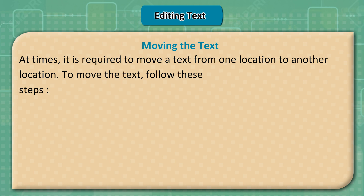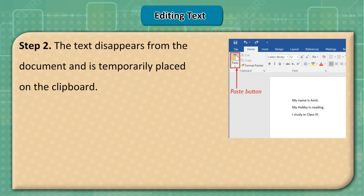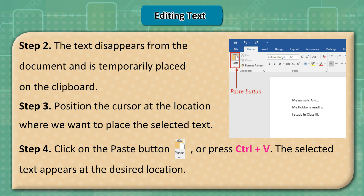Moving Text: At times it is required to move text from one location to another. Step 1: Select the text to move, then click the Cut button in the Clipboard group on the Home tab, or press Ctrl+X. Step 2: The text disappears and is temporarily placed on the clipboard. Step 3: Position the cursor at the destination. Step 4: Click Paste or press Ctrl+V. The text appears at the desired location.